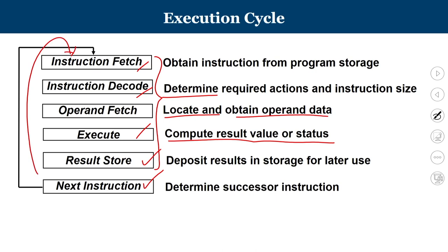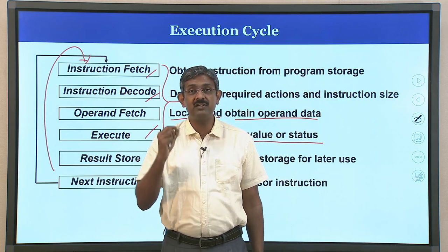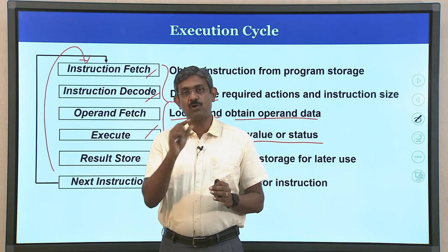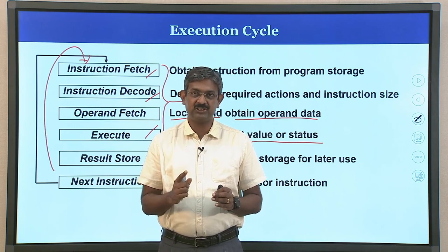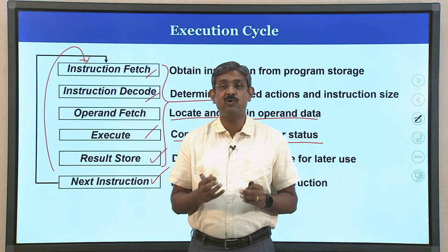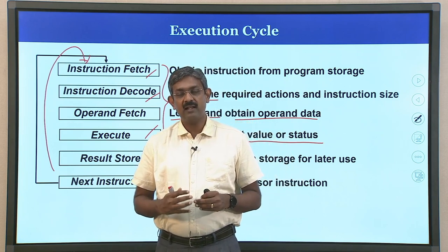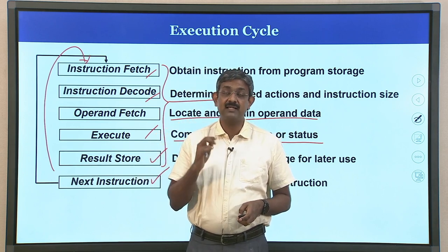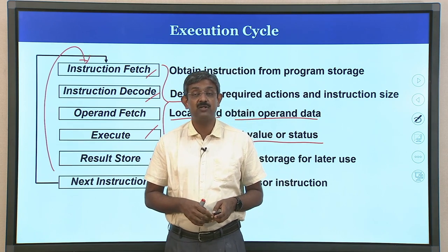To carry out a task, the task is represented as a program, and the program consists of multiple instructions saved in memory. The computer executes each instruction based upon the logic. Instructions stored in memory need to be transferred into the processor one by one and executed — fetching, decoding, operand fetch, execution, storing the result, then moving to the next instruction. These basic steps constitute the instruction execution cycle.